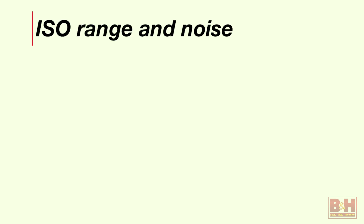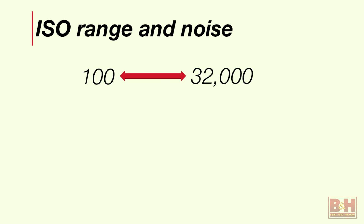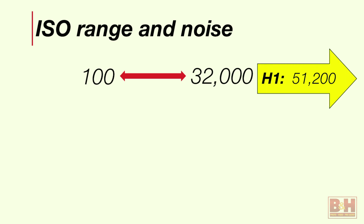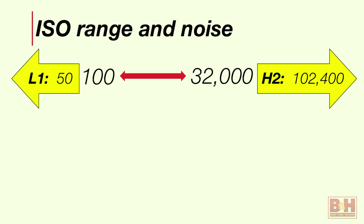One of the big questions we get is about the ISO range. The basic ISO range of the 5D Mark IV is 100 to 32,000 — boosted a third of a stop over the 5D Mark III, which isn't a huge increase. That can be expanded on the high end, and knocked down on the low end with ISO 50, so you've got a pretty broad range.